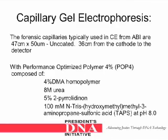The forensic capillaries typically used in CE from ABI are 47 centimeters by 50 micrometers uncoated, 36 centimeters from the cathode to the detector. They contain performance-optimized 4% polymer, POP4, which is composed of 4% DMA homopolymer, 8-molar urea, 5% 2-pyrrolidinone, and 100 millimolar N-tris-hydroxymethyl-methyl-3-aminopropane sulfonic acid (TAPS) at a pH of 8.0.